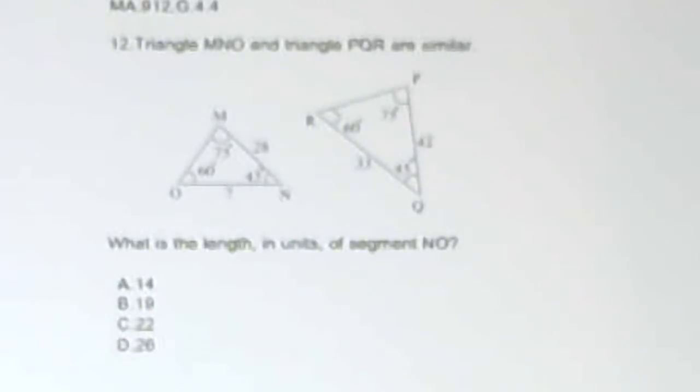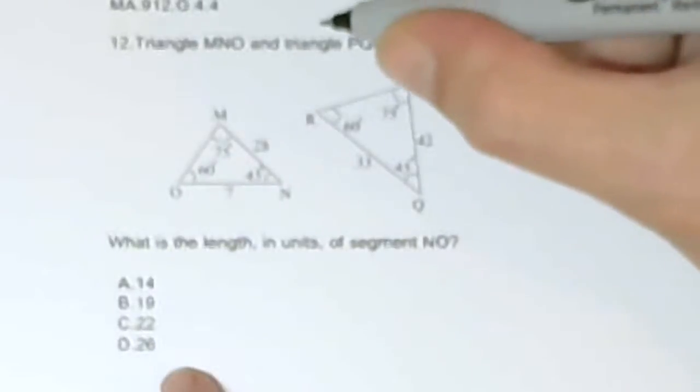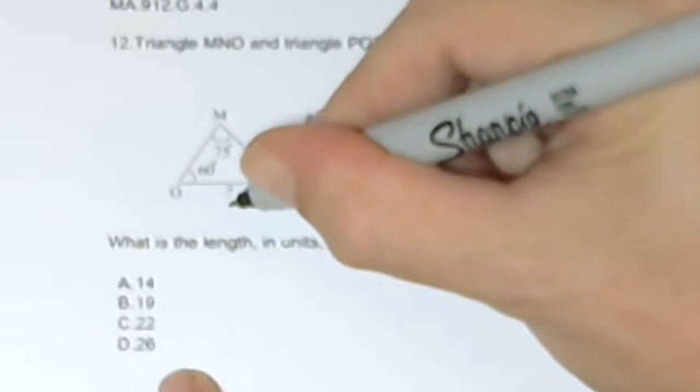It says triangle MNO and triangle PQR are similar. Well, it should say triangle MNO is similar to triangle PQR, but that's sort of a minor nitpick. It asks, what is the length in units of segment NO? It wants this one here.